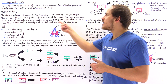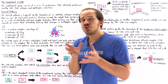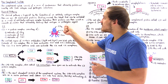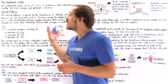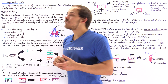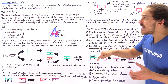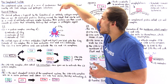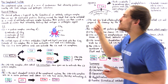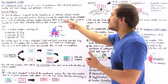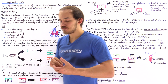What exactly happens following the formation of the antibody-antigen complex? Usually, once the antibody-antigen complex is formed, that's when we activate the classical pathway of the complement system. So, what triggers the classical pathway is the formation of the antibody-antigen complex. What exactly happens once we form that complex to initiate the classical pathway?